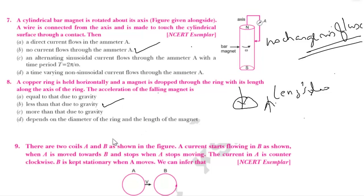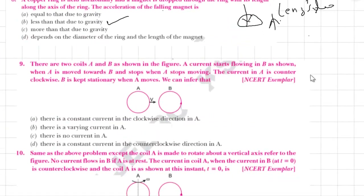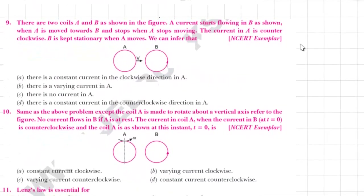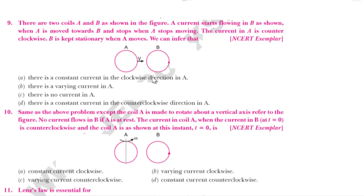Next question: There are two coils A and B as shown in figure. A current flows in B as shown in the figure. When A is moved towards B and then stops — when A stops moving, the current in A is counterclockwise and B is kept stationary while A moves. We can infer that.